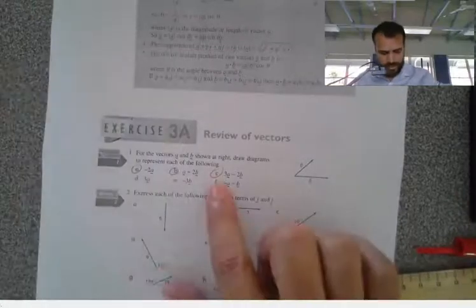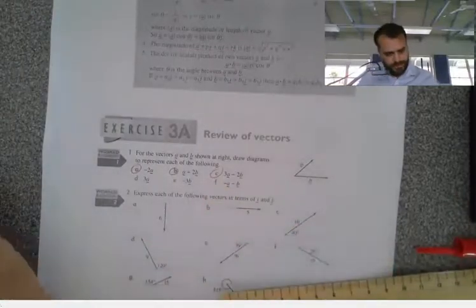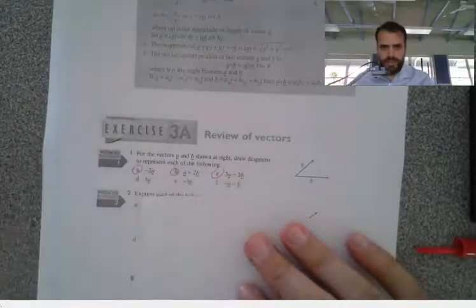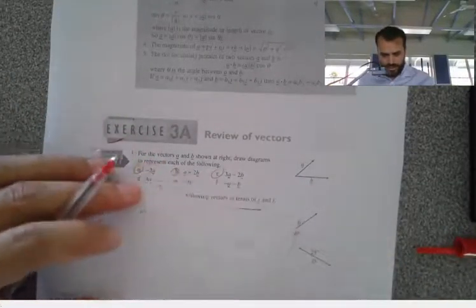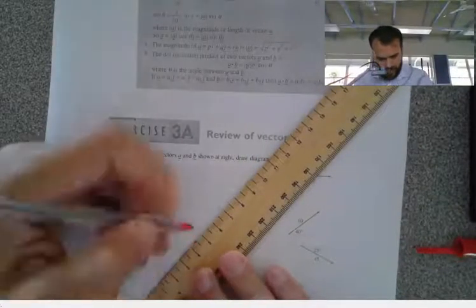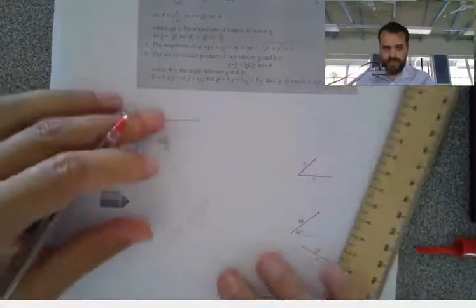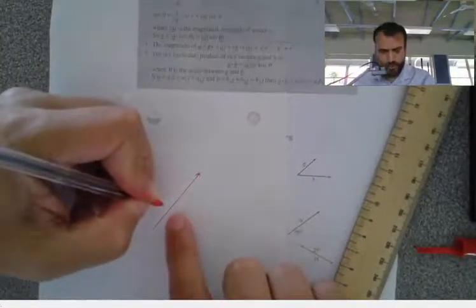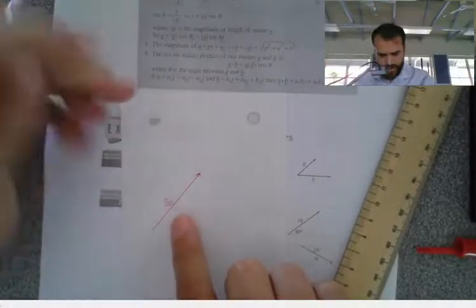All right, last question, 1C. 3A minus 2B. Obviously, this is just sort of adding everything together. So 3A, it's off in this direction. 4.5 centimeters, because A is 1.5 centimeters. So that's 3A there.